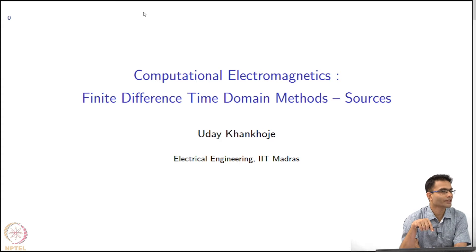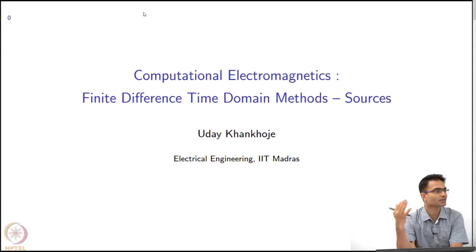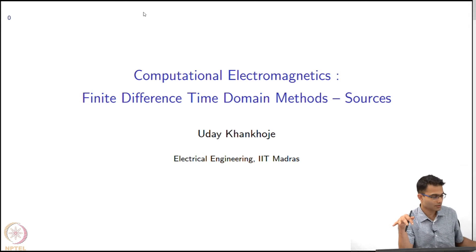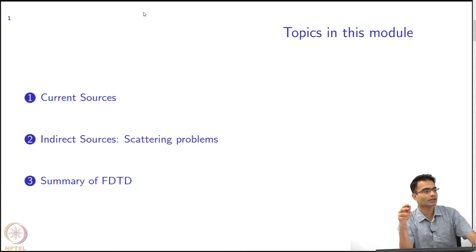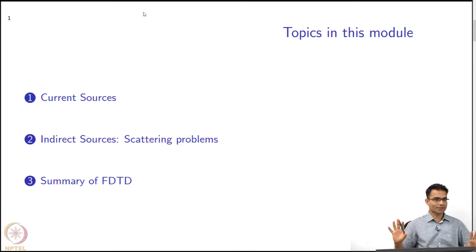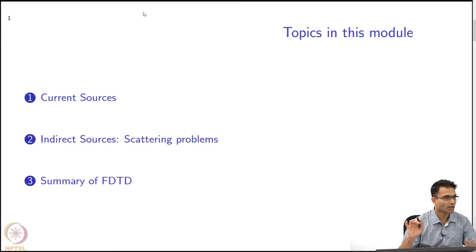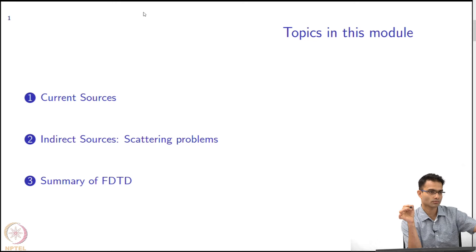The final module to conclude FDTD covers how to deal with sources. If you give a current source or an incident field, how do you get this into the equation? There are two different classes of problems: one is the antenna community where you specify the current source — a specific value in amps at a given place in time and space.